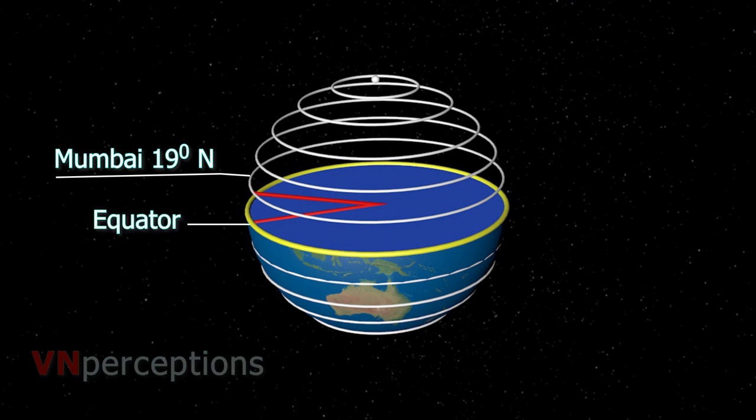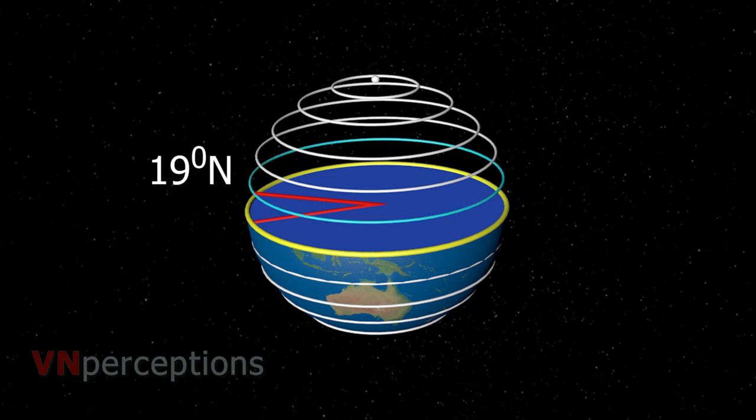If a line were to be drawn from Mumbai on the globe to the center of the globe, then the line would make an angle of 19 degrees with the horizontal. Another angle of 19 degrees can be measured south of the equator. So there are two 19 degrees, one in the north and other one in the south. It must be clearly mentioned when I say 19 degrees, Mumbai is at 19 degrees north.